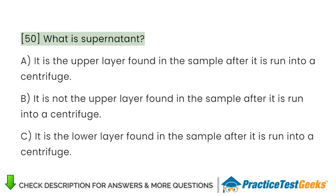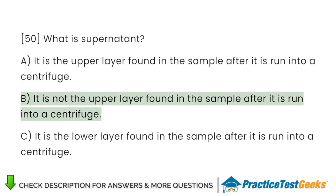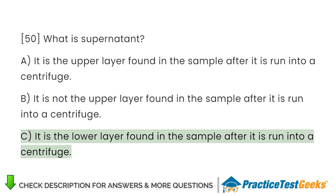What is supernatant? A. It is the upper layer found in the sample after it is run into a centrifuge. B. It is not the upper layer found in the sample after it is run into a centrifuge. C. It is the lower layer found in the sample after it is run into a centrifuge.